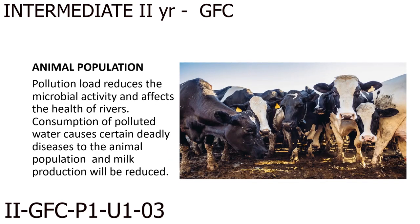Animal population. Pollution load reduces the microbial activity and affects the health of rivers. Consumption of polluted water causes certain deadly diseases to the animal population and milk production will be reduced.